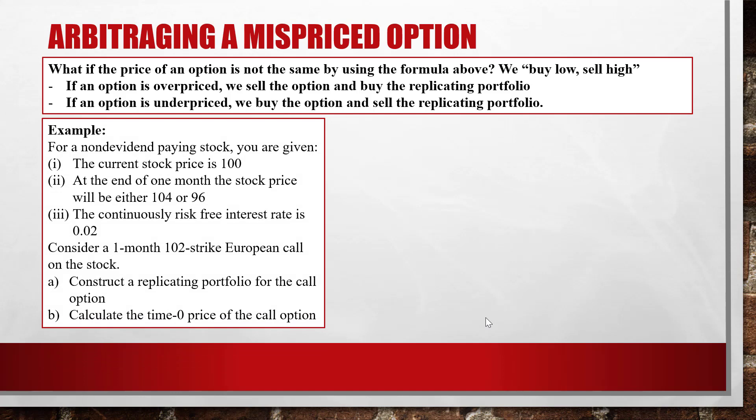Example for a non-dividend-paying stock: the current stock price is $100. At the end of one month, the stock price can be either $104 or $96. The continuously compounded risk-free interest rate is 0.02 (2%). Consider a one-month $102-strike European call on the stock. Part (a): construct a replicating portfolio for the call option. Part (b): calculate the time-zero price of the call option.